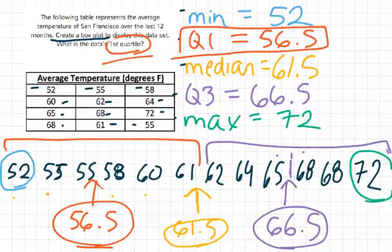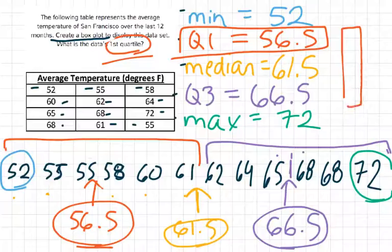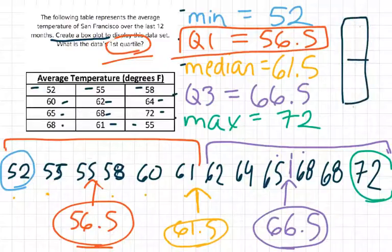So we just need to take, first let's start with Q1. We're going to create our box. So the box of the box plot is made out of Q1, the median and Q3. And then the whiskers are the minimum and the maximum.